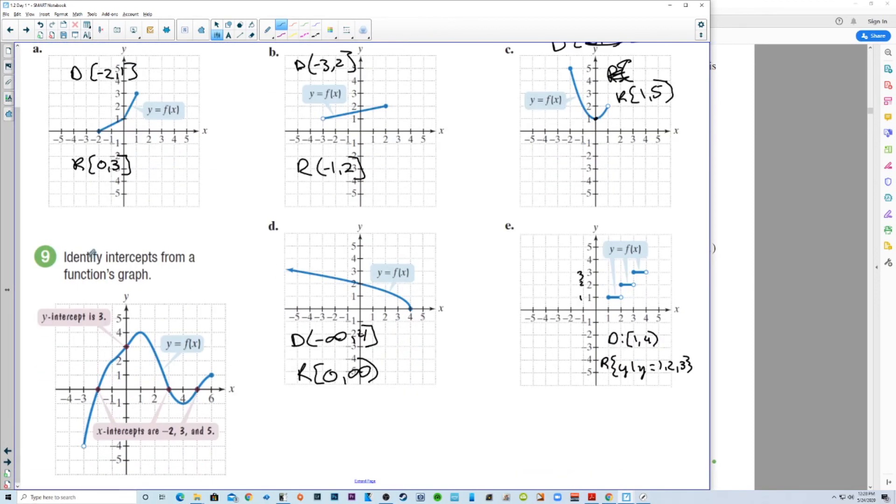And lastly, over here, we're going to identify the X and Y intercepts. So, identify intercepts from a functions graph. So, we have X intercepts at negative 2, 3, and 5. So, X intercepts at negative 2, 0, 3, 0, 5, 0. And Y intercept is at 0, 3.